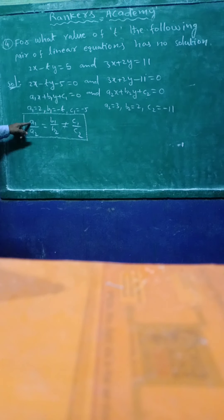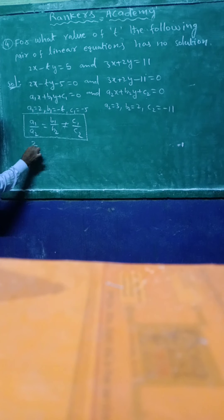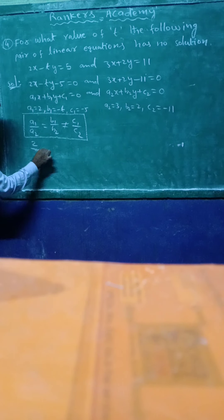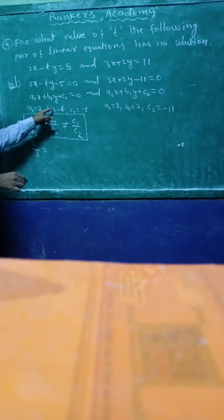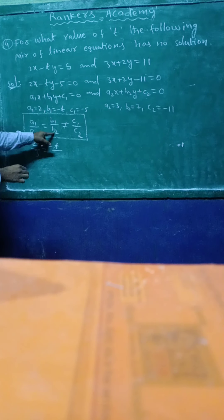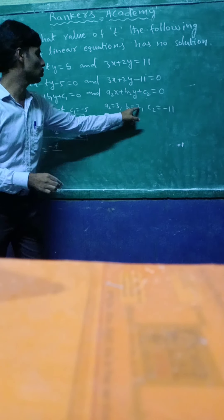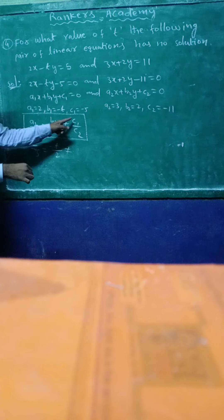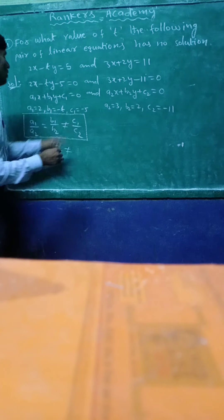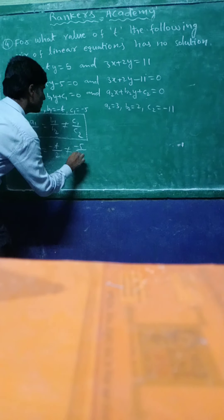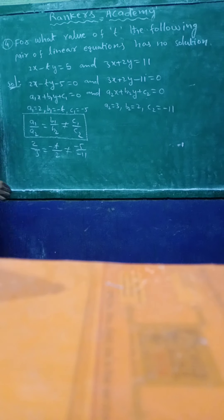Then substitute here: a1 equal to 2, a2 equal to 3, b1 equal to minus t, b2 equal to 2, c1 equal to minus 5, c2 equal to minus 11. So just this part only take, don't take the other part.